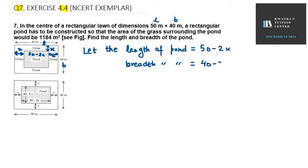So it will be 40 minus 2x. But हमें area of grass दिया हुआ है. जो यह area है around grass, वो हमें कितना दिया हुआ है 1184 meter square. This is given to us.